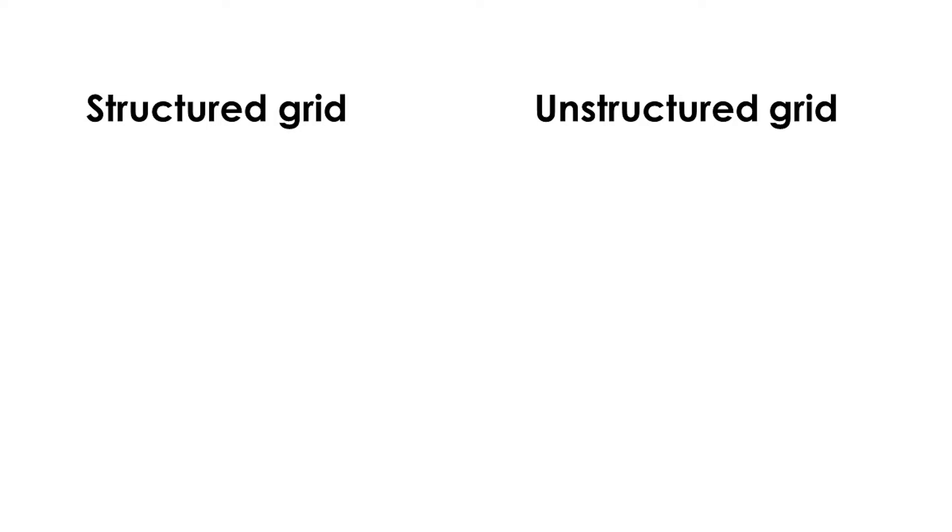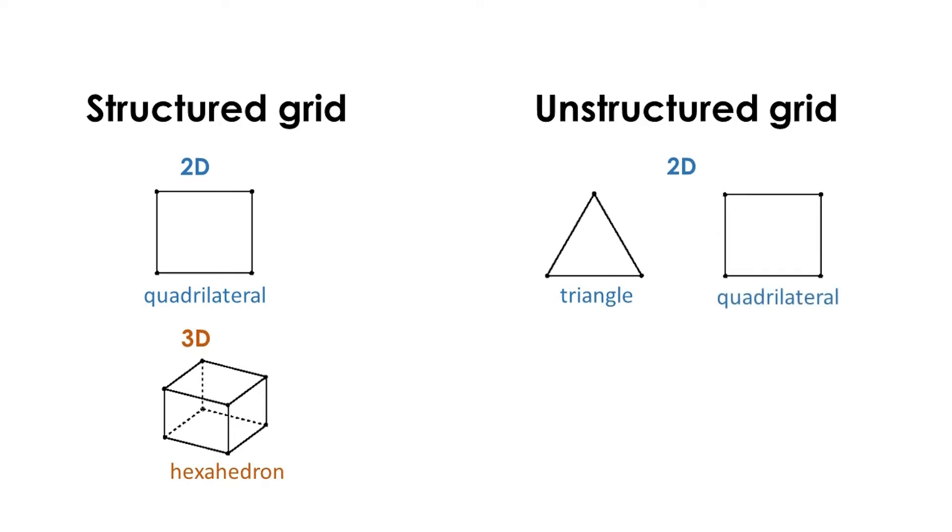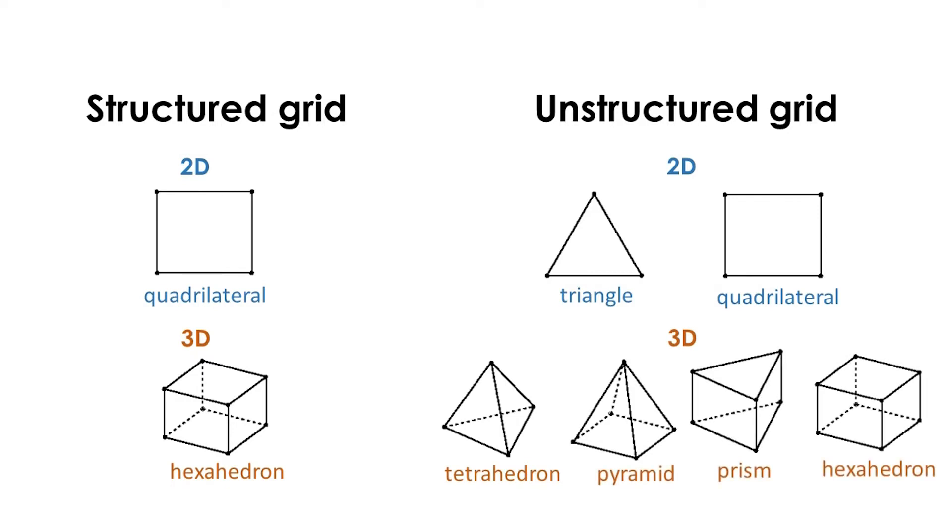For structured grids, quadrilaterals are used in two-dimensional, while hexahedrons are used in three-dimensional. As for unstructured grids, triangles or quadrilaterals are used in two-dimensional, while tetrahedrons, pyramids, triangular prisms, or hexahedrons are used in three-dimensional.